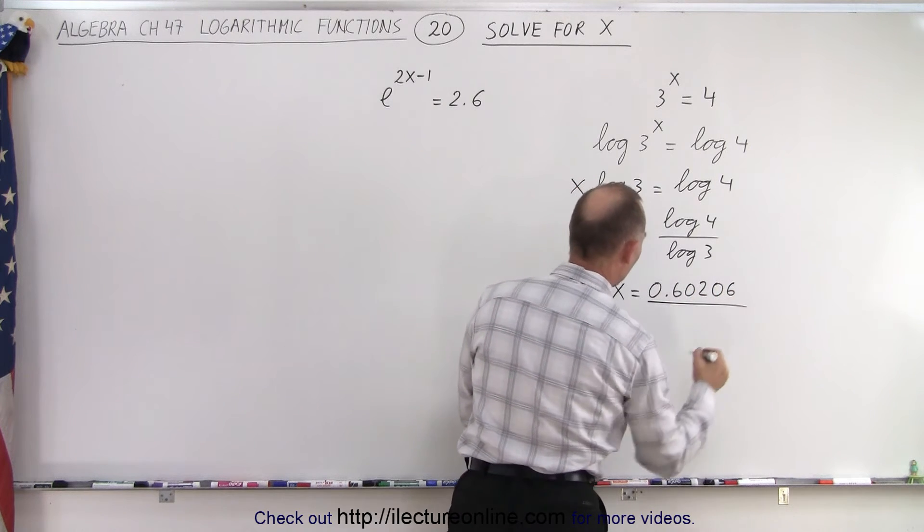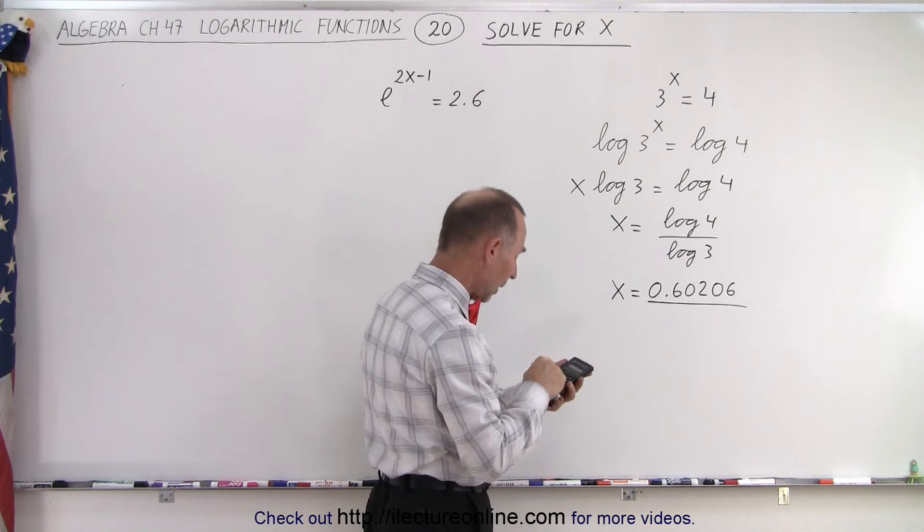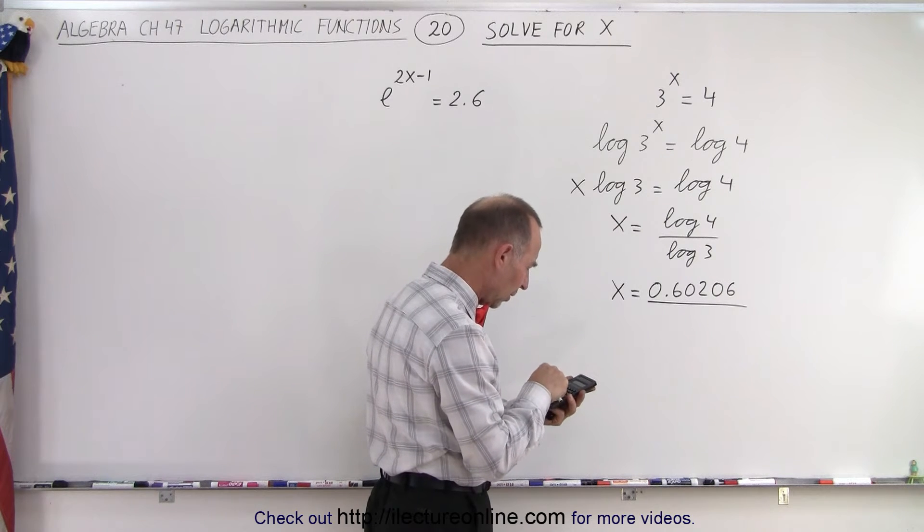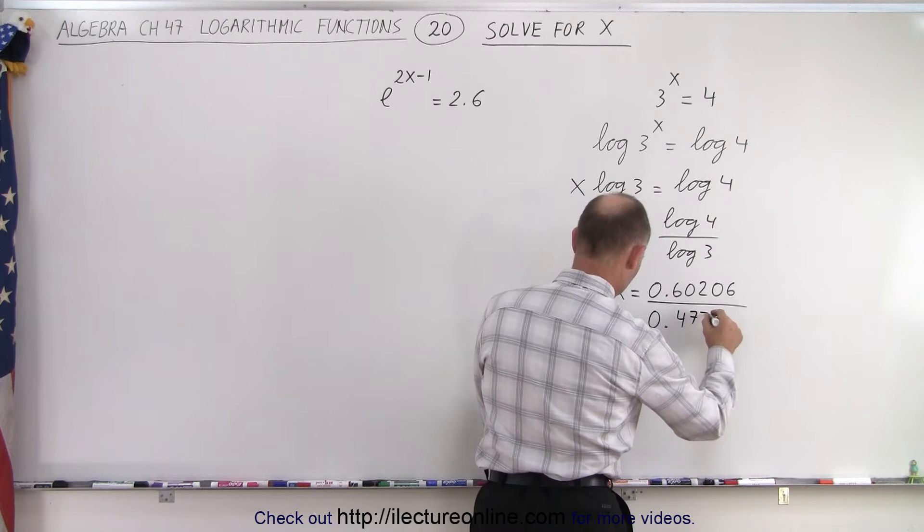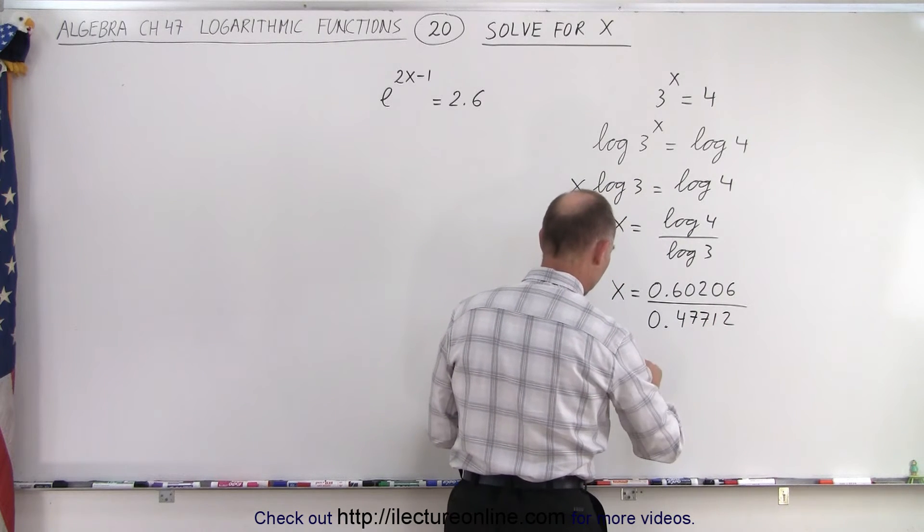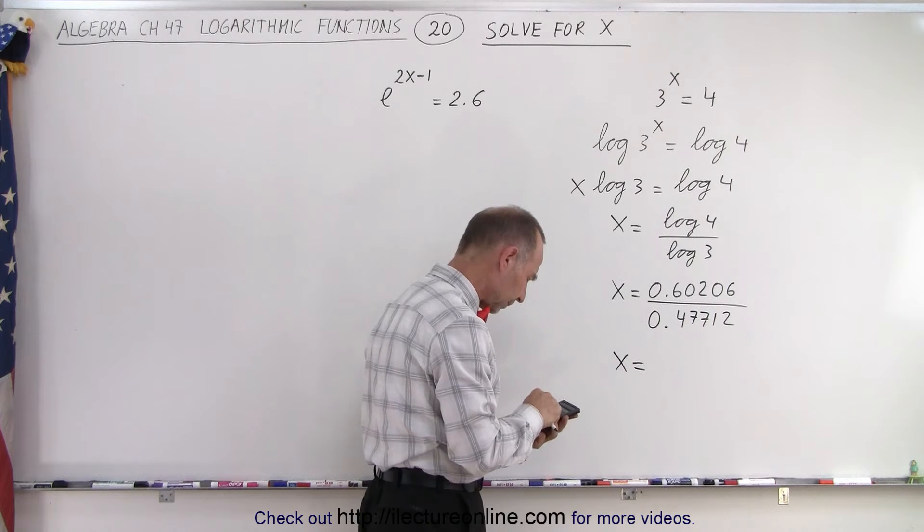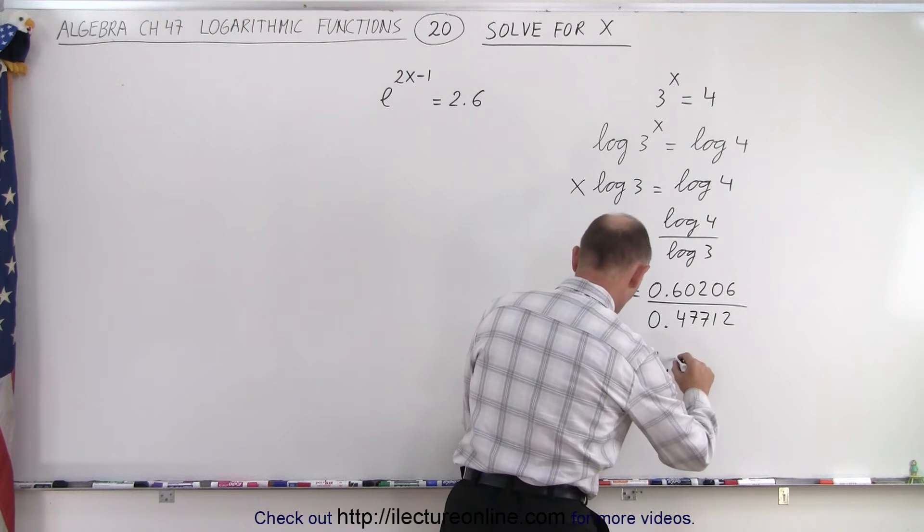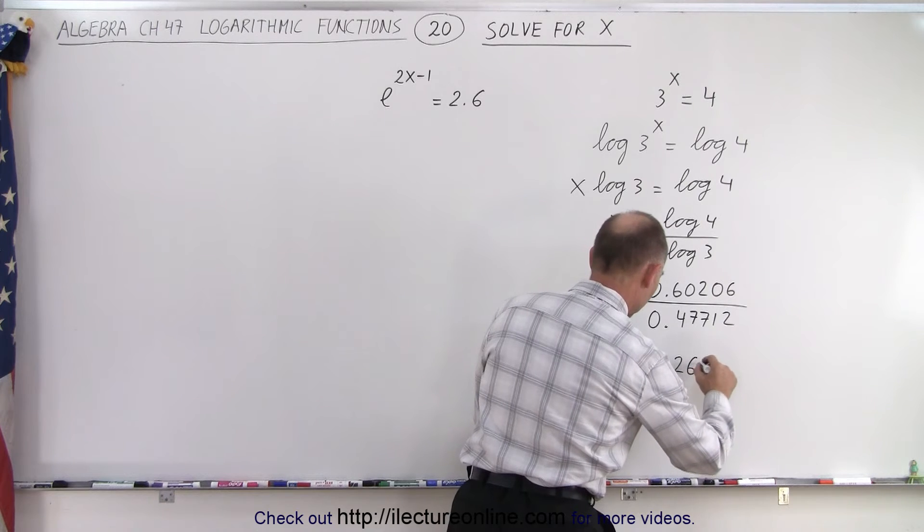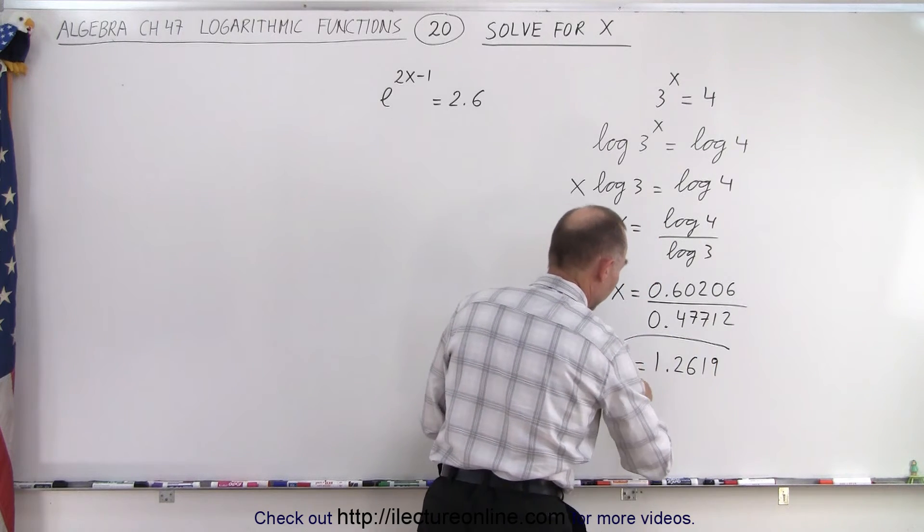Now we take 3, push the log button, and get 0.47712. Therefore, x = 1.2619 to four decimal places.